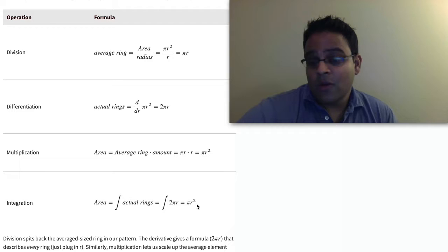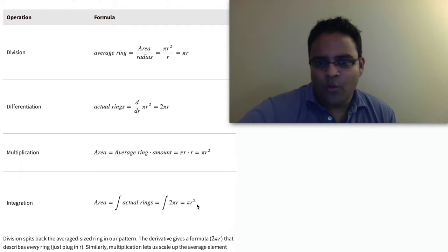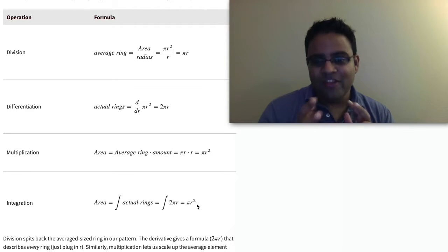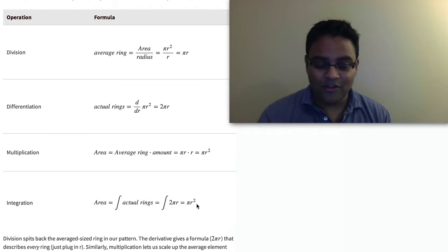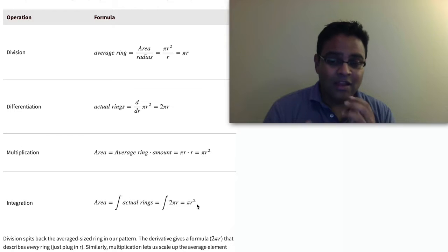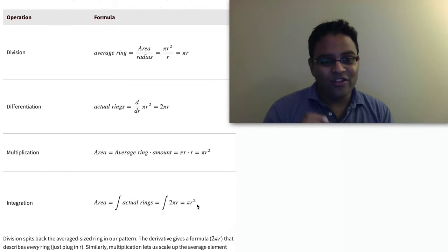Sometimes we actually do want the average, like the average transaction size of something or the average volume, but a lot of the time we actually want the step-by-step description of what's actually happening. That's a lot more detailed and useful oftentimes in science. Depending on what scenario you want, you might go to the more detailed level with integrals and derivatives, or stay at the high-level averaging of multiplication and division. The cool thing is that derivatives and integrals are basically just fancier versions of those two operations that we're used to.